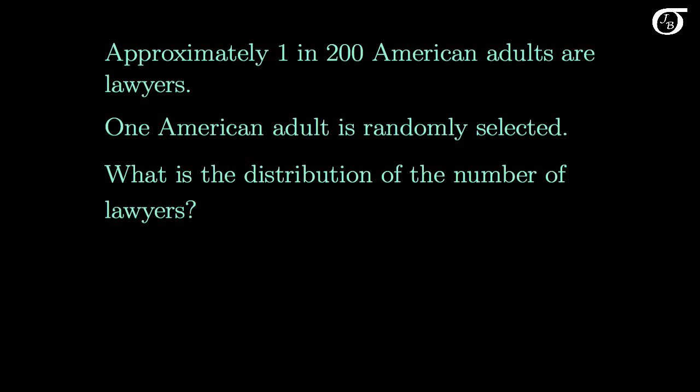Well we've got a single trial, each person is a lawyer or they are not, and the conditions of the Bernoulli distribution here are satisfied. So the number of lawyers is going to have a Bernoulli distribution with parameter p. And p is going to be simply the probability that any one individual person is a lawyer, which is about 1 in 200.